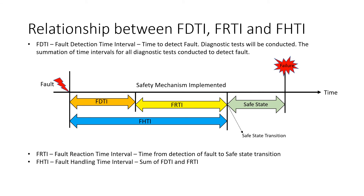What is the relationship between FDTI, FRTI, and FHTI? Here is the diagram which represents the relationship between them. FDTI is Fault Detection Time Interval — the time taken for the detection of a fault. We conduct a series of diagnostic tests until we find a fault; the summation of time intervals of all these diagnostic test cycles is FDTI. FRTI is the time between the detection of the fault and the entering of the safe state transition — this is the Fault Reaction Time Interval. FHTI is the summation of FDTI and FRTI, which is the Fault Handling Time Interval.